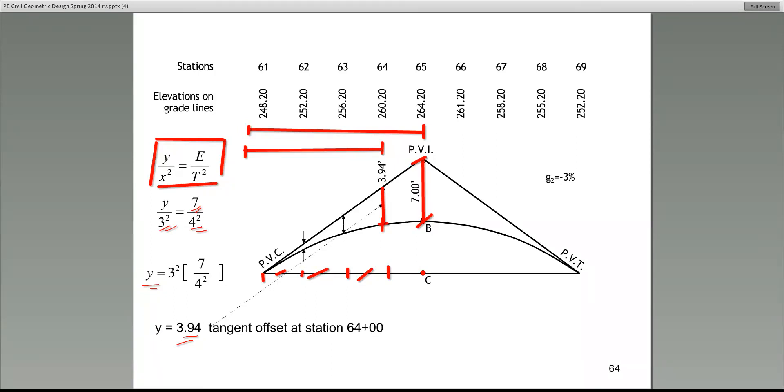Now, before we look at the next slide, I want you to give me the tangent offset at station 62, which would be approximately here. So give me the tangent offset at station 62. Well, what would you use for x, small x? One.